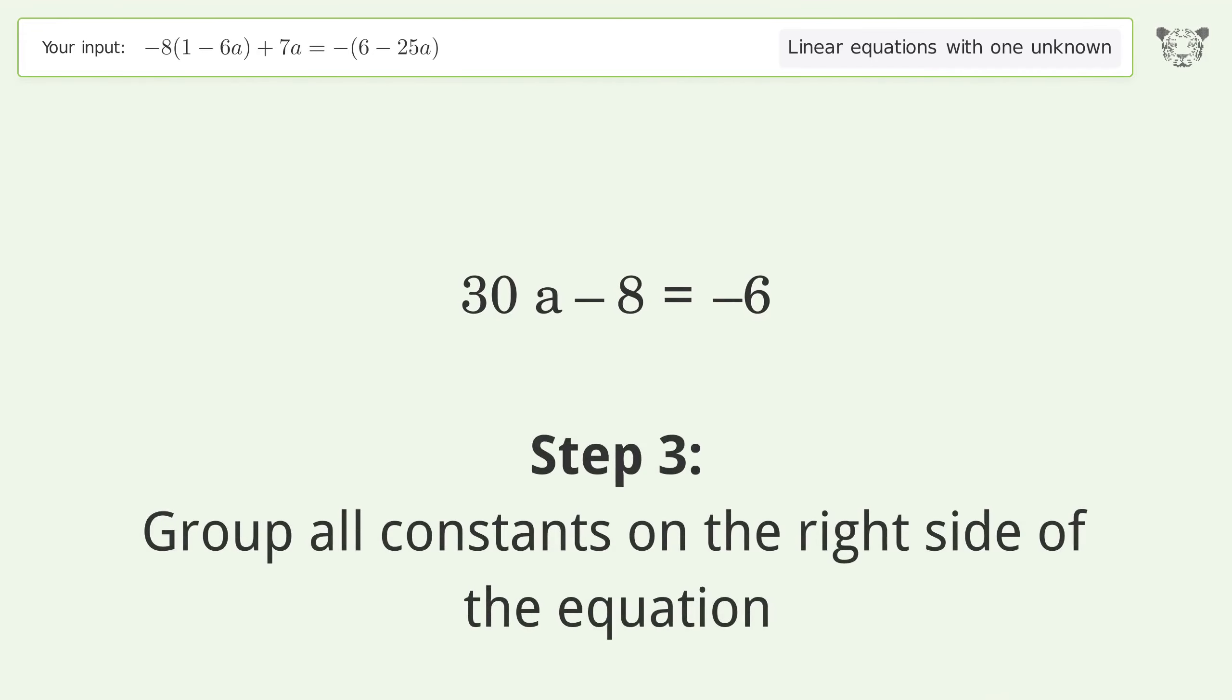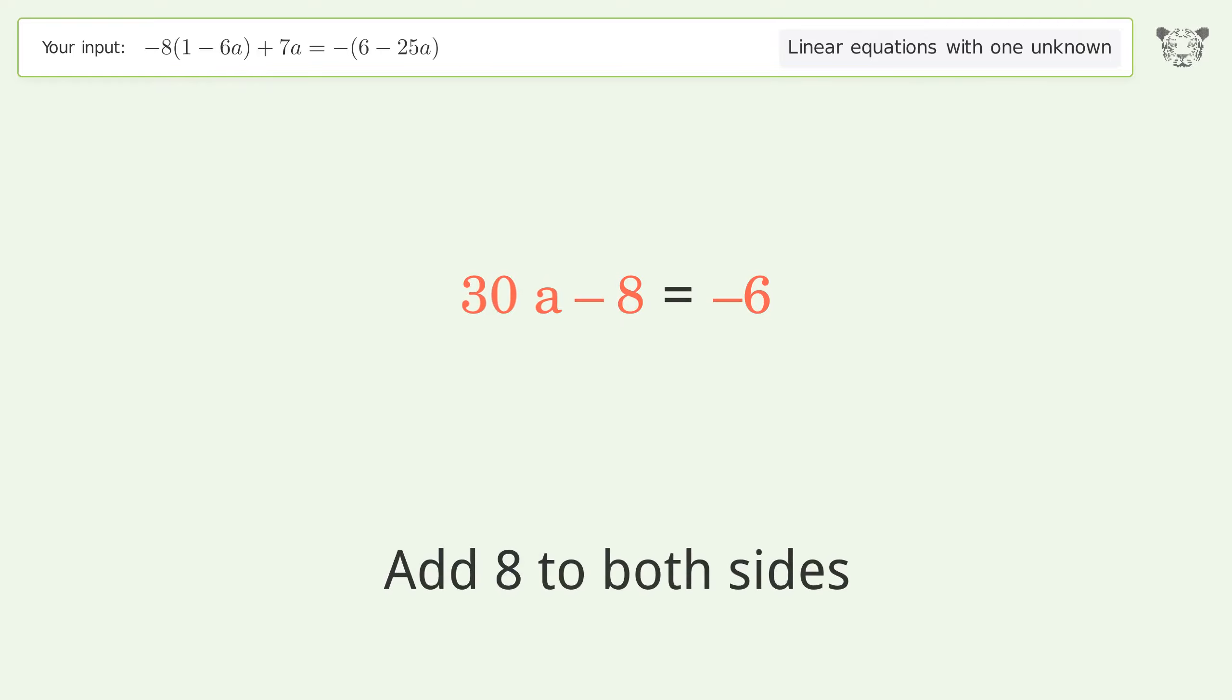Group all constants on the right side of the equation. Add 8 to both sides. Simplify the arithmetic.